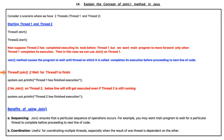In this line we have called the join method on Thread 1, and we will wait for Thread 1 to finish its execution. This line will get executed when Thread 1 completes its execution. We have not put any join on Thread 2, so the below line will still get executed even if Thread 2 is still running. This line will print that Thread 2 has finished execution, although Thread 2 may still be running.